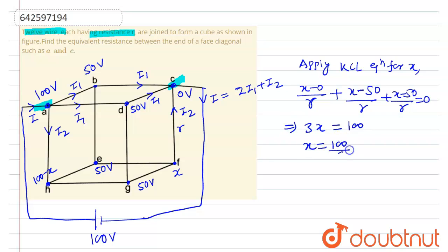Now, R_equivalent across AB equals total potential over total current. Total current is I, and I can be written as 2I₁ plus I₂.